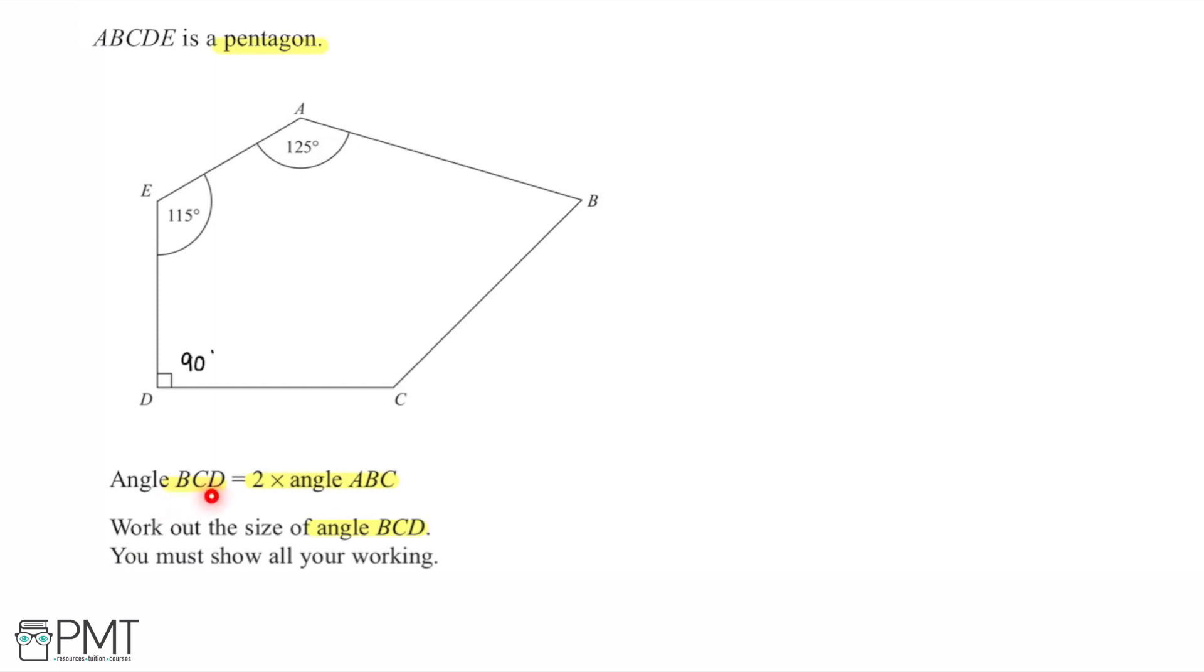I'm told here that angle BCD is equal to two times angle ABC. So if I were to give these a name I could label angle ABC up as x for example and then angle BCD is two lots of angle ABC so this is going to be 2x. So then I can just label them up on the diagram so if I look for BCD this angle here is going to be 2x and the angle ABC is going to be equal to x. So now I have all of the interior angles labelled up in my pentagon.